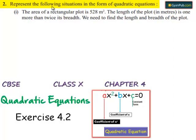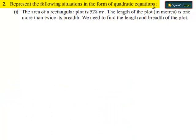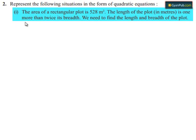Coming to the second problem, represent the following situations in the form of quadratic equations. The area of a rectangular plot is 528 square meters. The length of the plot in meters is one more than twice its breadth. We need to find the length and breadth of the plot.